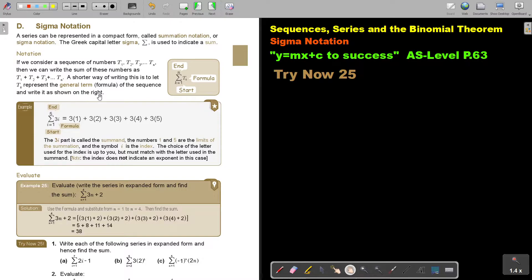That's the general formula of the sequence, and write it as shown on the right. I start where N is 1, and I end there. Let's look at this. 3I, where I is 1, and it must end at 5. So I will start substituting there in the place of I: 1, then you go on.